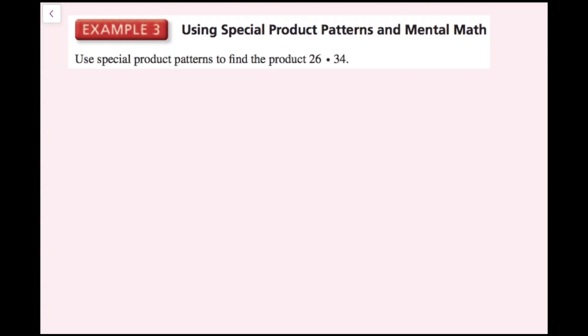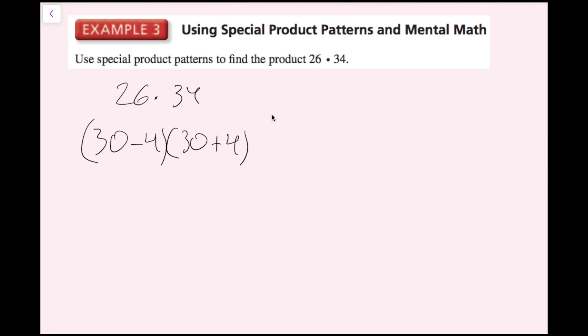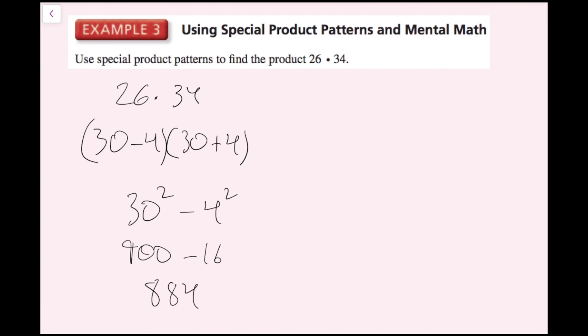For example 3, we use special product patterns to find the product of 26 and 34 using mental math. I notice 26 is 4 away from 30 and 34 is 4 away from 30, so I can rewrite 26 times 34 as 30 minus 4 times 30 plus 4. Using the sum and difference pattern, this becomes 30 squared minus 4 squared, which equals 900 minus 16, giving 884.